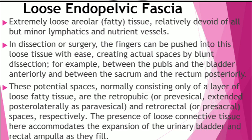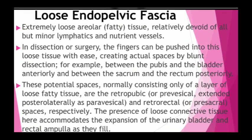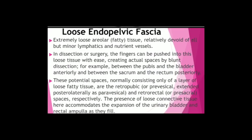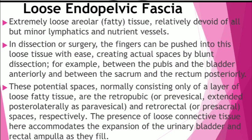You find this loose connective tissue between the pubis and the bladder anteriorly, and between the sacrum and the rectum posteriorly. This potential space is normally made up of a layer of loose fatty tissue. You could find it as the retropubic or pre-vesical space, extending posterolaterally as the para-vesical space, and also as the retrorectal or pre-sacral space. The presence of this loose connective tissue creates room for expansion of the urinary bladder and rectal ampulla during filling with urine and fecal matter.